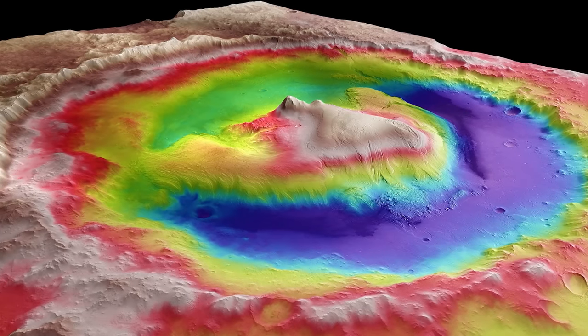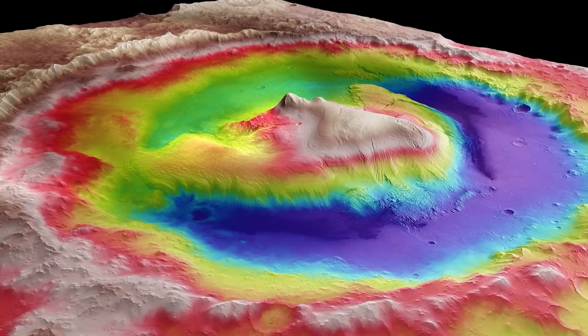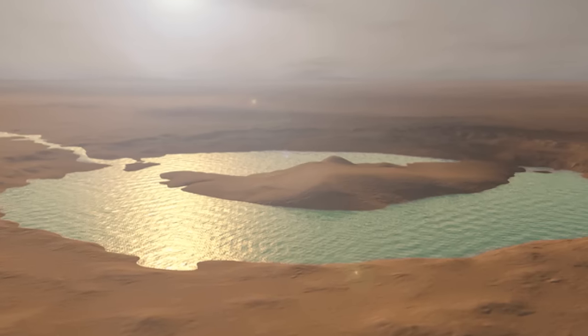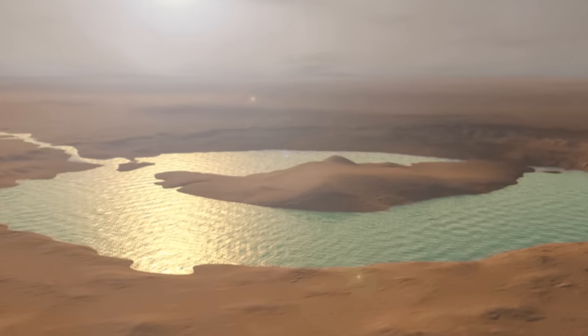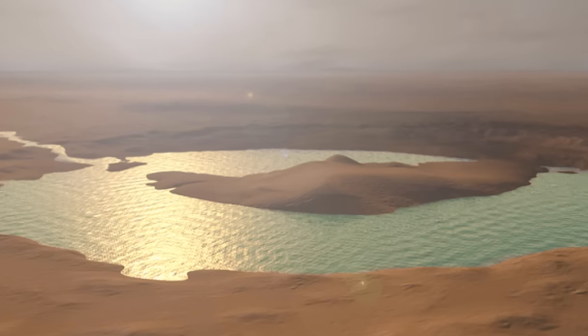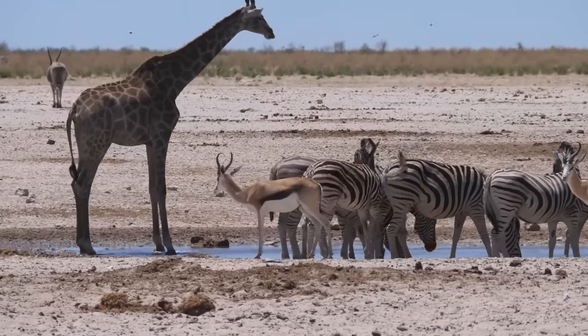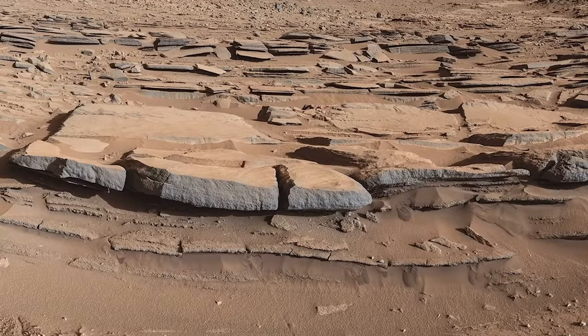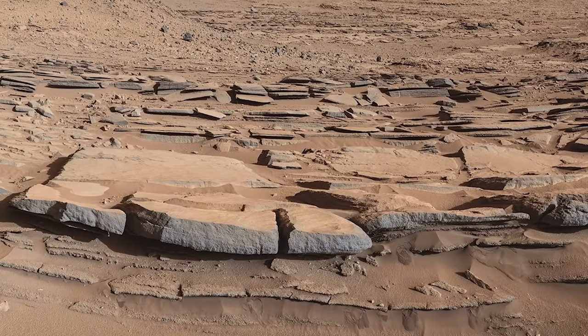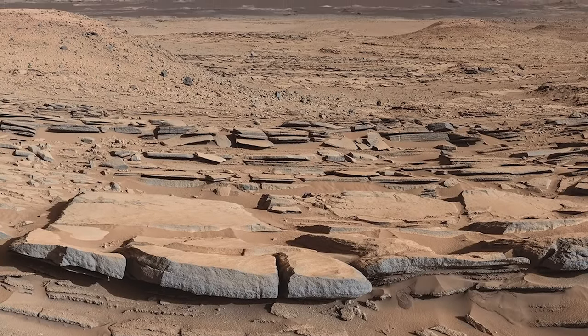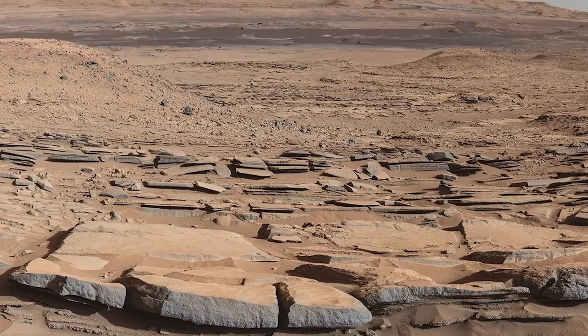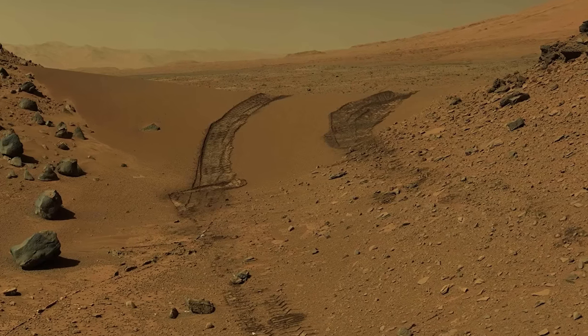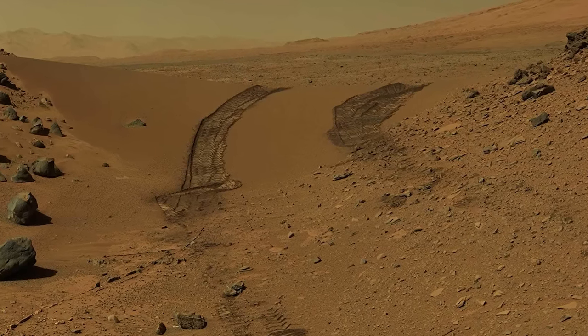This discovery means that at around the same time life was gaining a foothold on Earth, Mars had the ingredients necessary for life. What makes Gale Crater especially interesting is that it's believed to have once contained a lake. With the discovery of these organic molecules, one can't help but imagine a past Mars where water-filled lakes or oceans nurtured early forms of life. However, it's important to note that the presence of organic molecules doesn't directly point to life. Mars is a dynamic planet with a history of volcanic activity. These organic molecules could have been formed by non-biological processes or even delivered from outer space via meteorites. Despite the uncertainty, this discovery adds another layer to Mars' already complex and intriguing story.